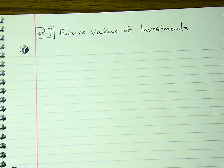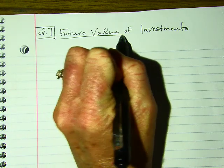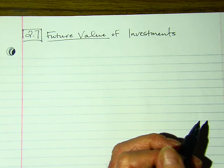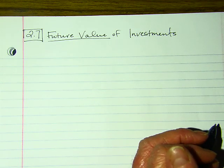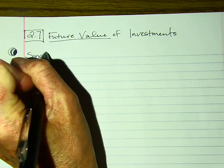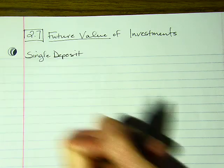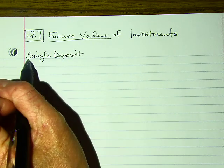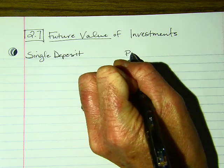Alright guys, we're going to jump into section 2.7 and do some more calculations. Section 2.7 talks about future value — how much will you have in the future if you deposit into your account? There are two kinds: a single deposit, where you're only making one deposit at the very beginning, which has a specific formula, and periodic deposits.